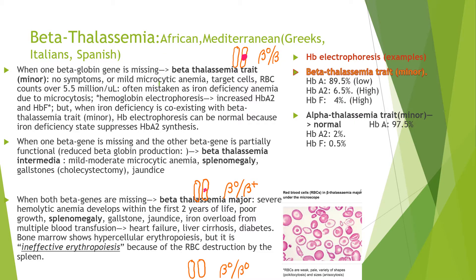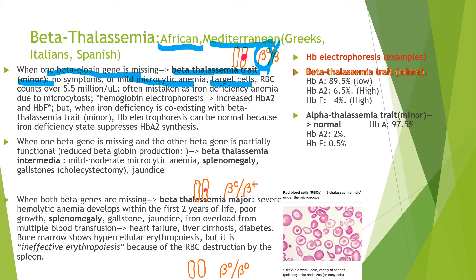When beta-globin genes are defective, beta thalassemia develops. Beta thalassemia is frequently seen in people originating from the Mediterranean area, such as Greece, Italy, Spain, and Africa. When one beta-globin gene is missing, it is called beta thalassemia trait or beta thalassemia minor. They have no symptoms or very mild microcytic anemia, target cells, RBC counts over 5.5 million, and are often mistaken as iron deficiency anemia — just like alpha thalassemia trait.